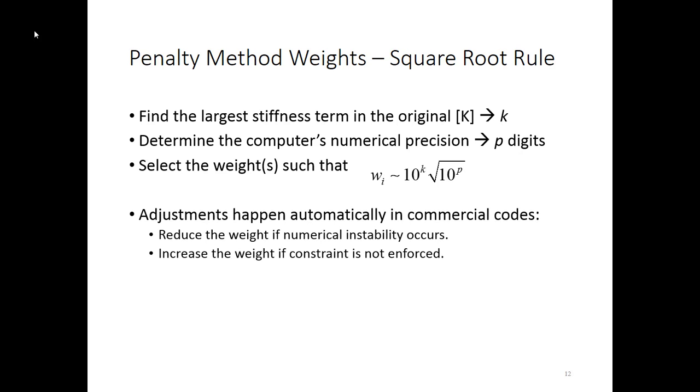In a commercial code, it's going to use an approach like this initially, but then it will monitor. If it has problems converging, then it's going to reduce the weight. You often have to check to see if the constraint was not satisfied and then tell the software to increase the weight if it's not satisfied sufficiently.